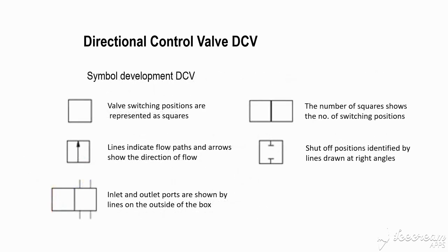For the directional control valve symbol: a two-position valve is drawn as a rectangle divided into two sections. The right side represents the normal position and the left side represents the activated position — what position the valve transfers to when activated.